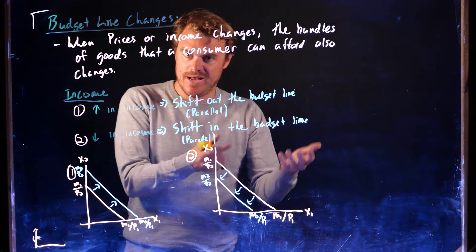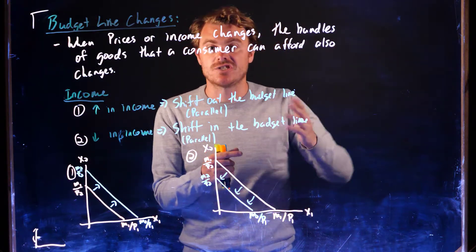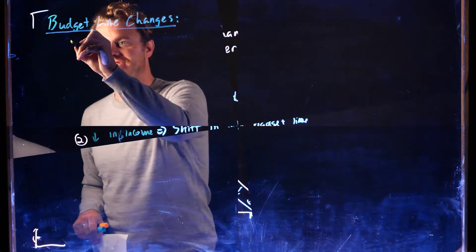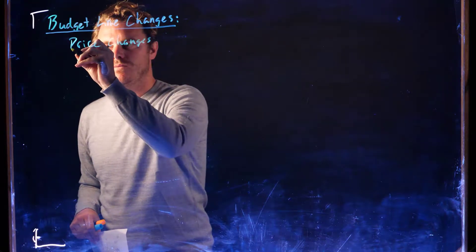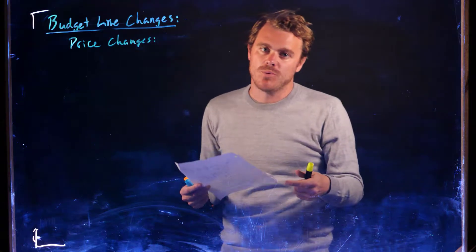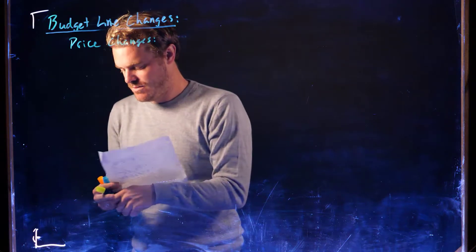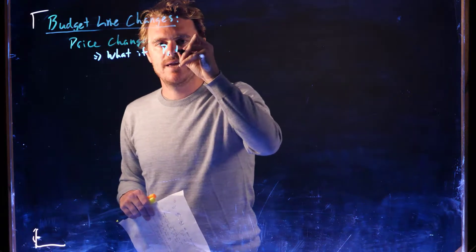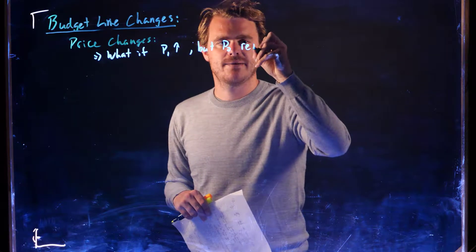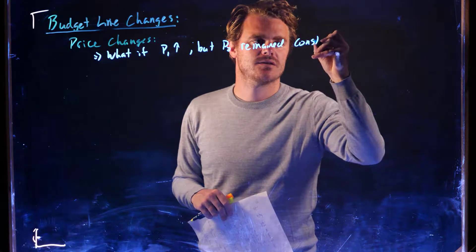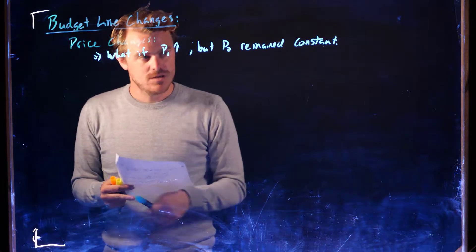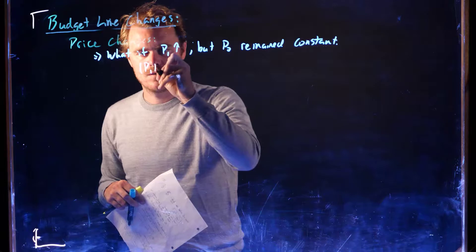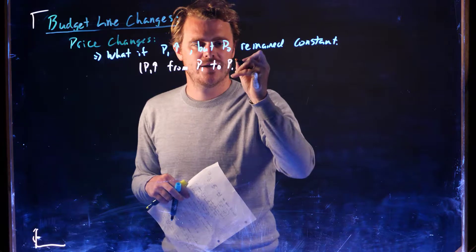Now let's think about price changes — it's going to be a little bit more complicated because it's going to change the slope when we change one of the prices. We could also make it more complicated and change two prices at once. So let's think about price changes. What if P1 increased but P2 remained constant? Let's say P1 increased from P1 to P1-prime.